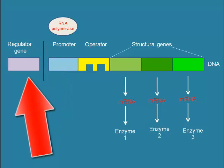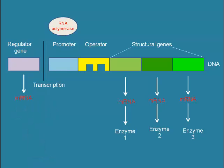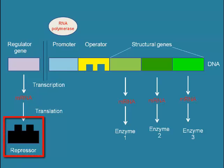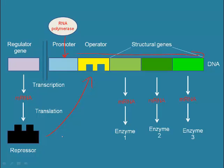Further upstream of these genes is the regulator gene. It's some distance away on the DNA, and it regulates the activity of the structural genes. It codes for a repressor protein, which normally, when glucose is present, actively binds to the operator and prevents RNA polymerase from binding to the promoter. The repressor protein is always coded for, and is therefore always present.